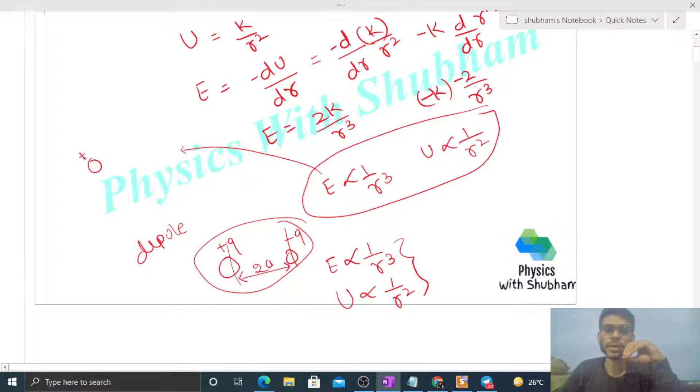But for a gravitational dipole, we would need to place +m and -m at a small separation. What is -m? It's negative mass, which doesn't exist. In actual practical cases, negative mass doesn't exist, so gravitational dipoles are not possible.